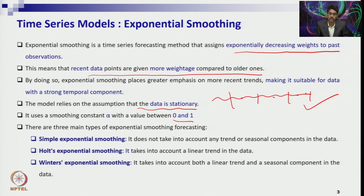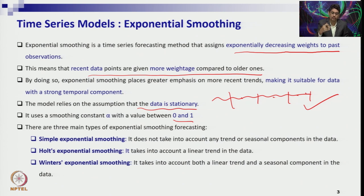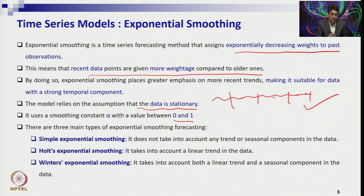The first is simple exponential smoothing, which we are going to discuss today. We can extend it for different types of data patterns — as we discussed in the components of time series session, data can be seasonal or can have a trend. If data has an uptrend or downtrend, you can use Holt's exponential smoothing. If data has both seasonality and trend, you can use the Winter's Holt method or Winter's exponential smoothing. In the forthcoming sessions we will discuss these two concepts in detail, but today we will consider only simple exponential smoothing.